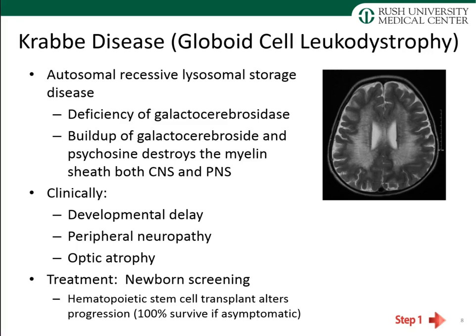Krabbe disease, also termed globoid cell leukodystrophy — remember that term as it is frequently tested — is autosomal recessive and a lysosomal storage disease. It results from a deficiency of galactocerebrosidase, causing buildup of galactocerebroside and psychosine, which destroy the myelin sheath in both the central and peripheral nervous systems. Clinically, patients have developmental delay, peripheral neuropathy, and optic atrophy. Treatment is hematopoietic stem cell transplant. In some states it is on the newborn screen; transplant works best in asymptomatic patients, with approximately 100% survival in that group.